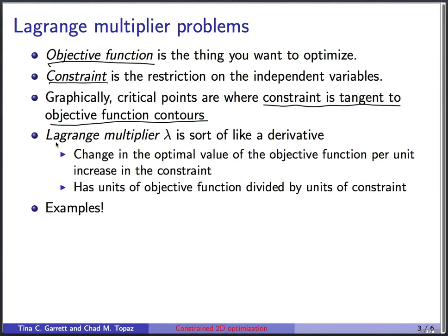There's also a quantity called the Lagrange multiplier. We frequently symbolize it with this Greek letter lambda, and it's kind of like a derivative. So what the Lagrange multiplier tells you is the change you get in the optimal value of the objective function if your constraint increased by a unit.